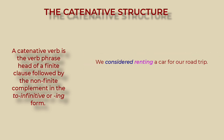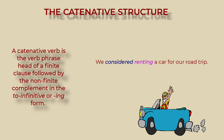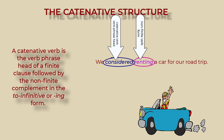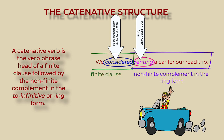We considered renting a car for our road trip. 'Considered' is the catenative verb. It links to the non-finite verb 'renting.' In this case, you can see that it is an -ing form. This is part of the non-finite complement: 'renting a car for a road trip.'